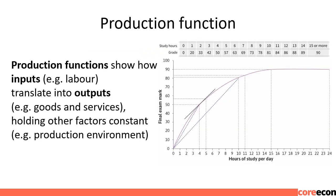What we just saw in terms of study hours and grades can be seen in terms of a production function. Production functions show how inputs — for example, labor — translate into outputs — for example, goods and services — holding other factors constant, such as the production environment. In this example, the input is hours of study per day and the output is the grade on the final exam.